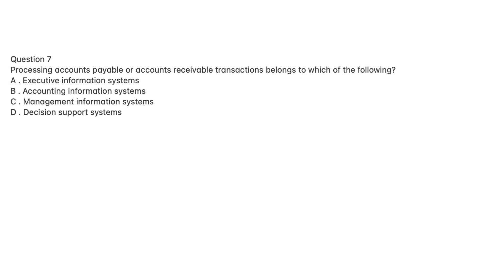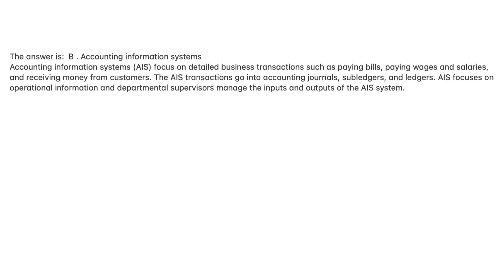Question 7. Processing accounts payable or accounts receivable transactions belongs to which of the following? A. Executive information systems. B. Accounting information systems. C. Management information systems. D. Decision support systems. The answer is B, accounting information systems. AIS focuses on detailed business transactions such as paying bills, paying wages and salaries, and receiving money from customers. The AIS transactions go into accounting journals, sub-ledgers, and ledgers. AIS focuses on operational information and departmental supervisors manage the inputs and outputs of the AIS system.